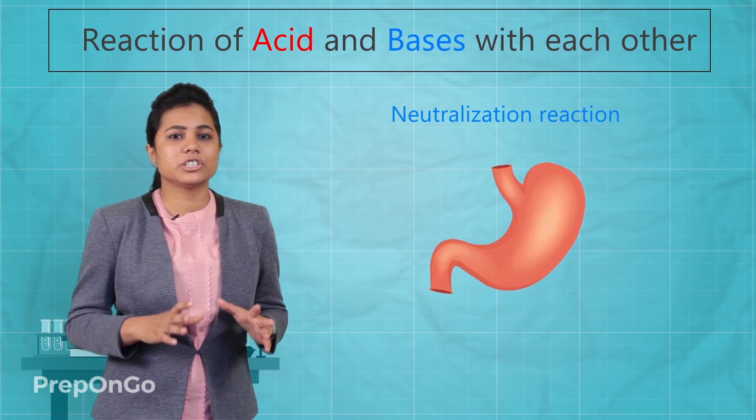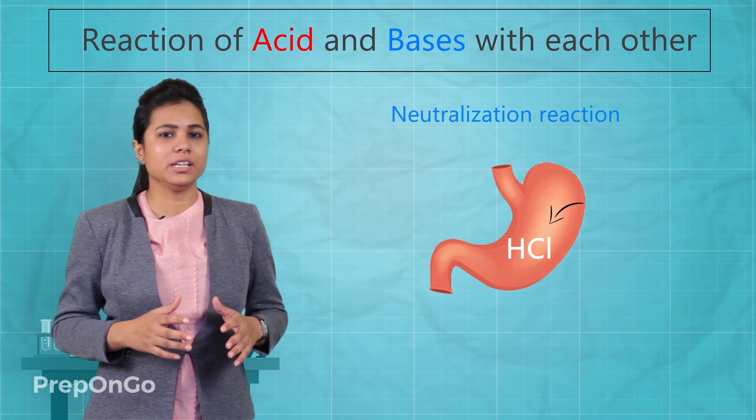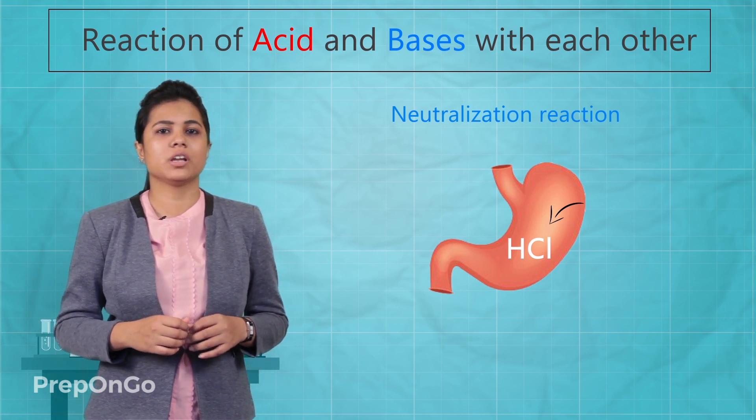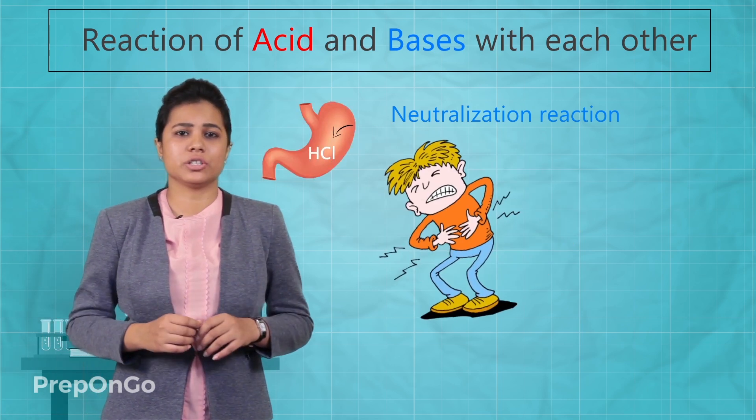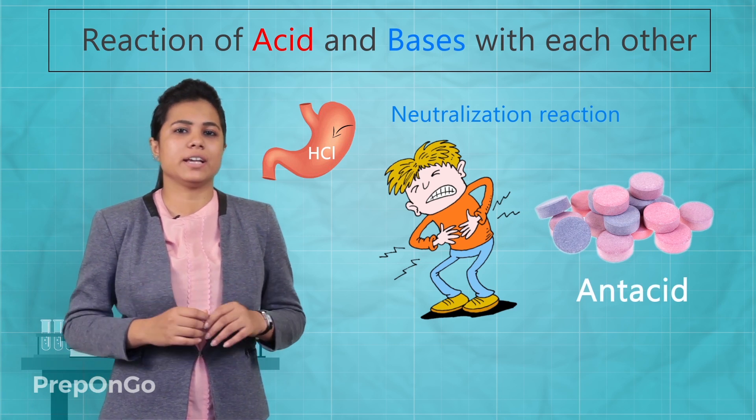Now for the digestion in the stomach our stomach releases hydrochloric acid. Sometimes due to overeating our stomach releases excess hydrochloric acid due to which we undergo pain and irritation. Now to get rid of this pain we eat antacids.